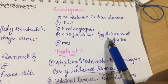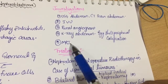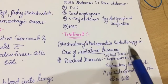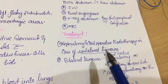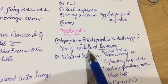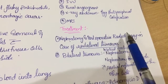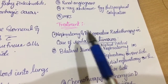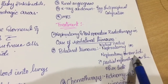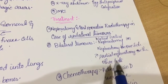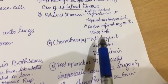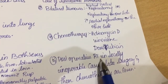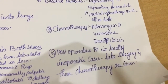Investigations include ultrasound abdomen, CT scan abdomen, IVU, renal angiogram, X-ray abdomen showing egg-shell peripheral calcification, and MRI. Treatment: for unilateral tumor — nephrectomy and postoperative radiotherapy. For bilateral tumor — bilateral partial nephrectomy, or nephrectomy on one side with partial nephrectomy on the other side. Chemotherapy includes actinomycin D, vincristine, and doxorubicin. In locally inoperable cases, postoperative radiotherapy is given first, followed by surgery and then chemotherapy.